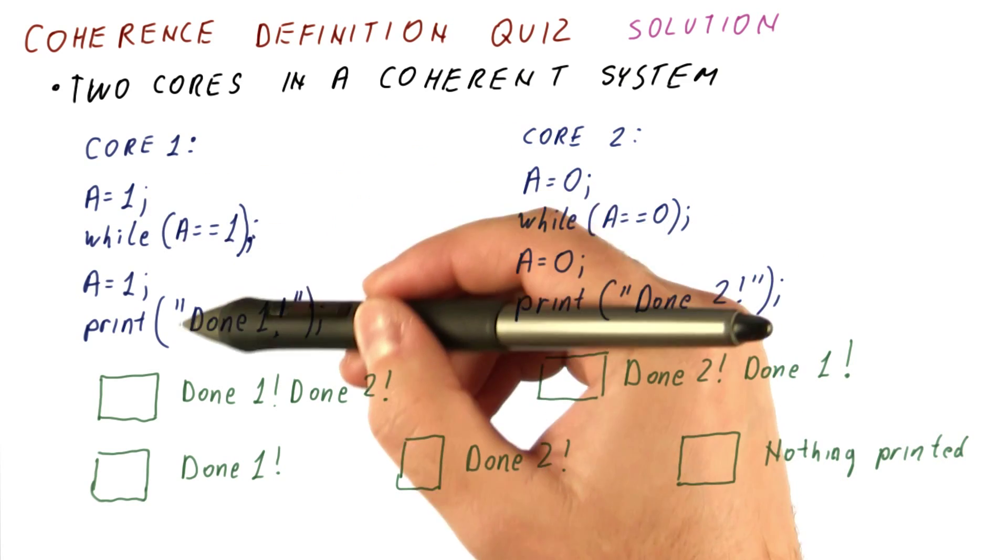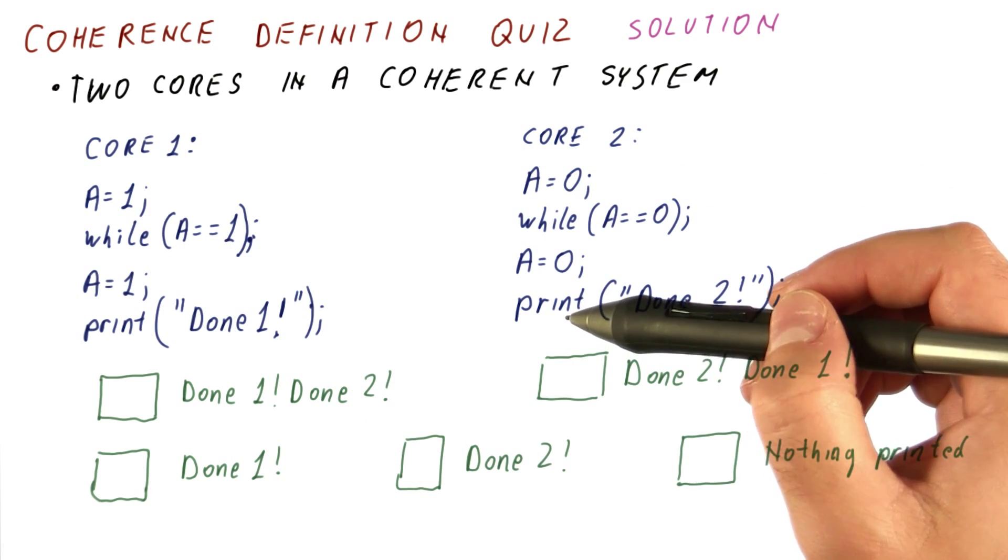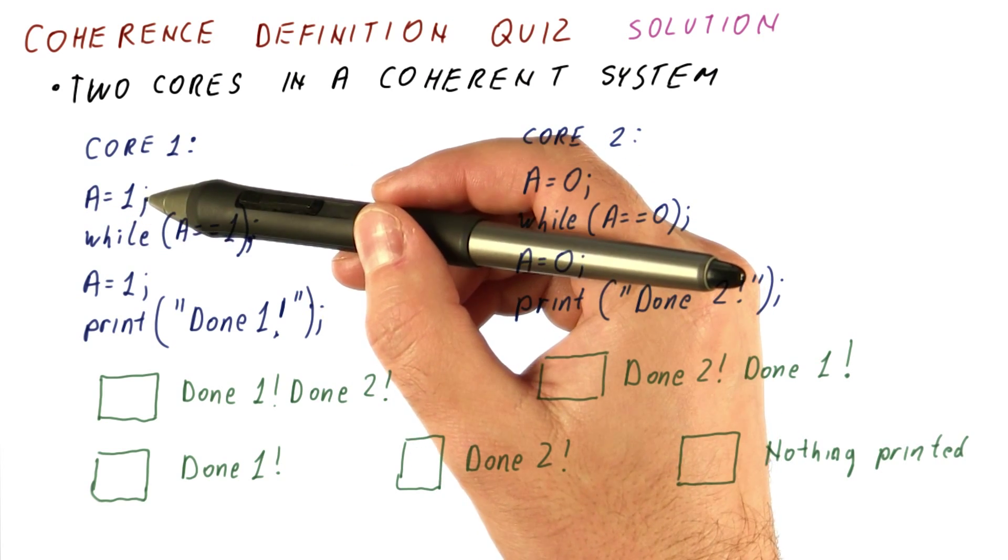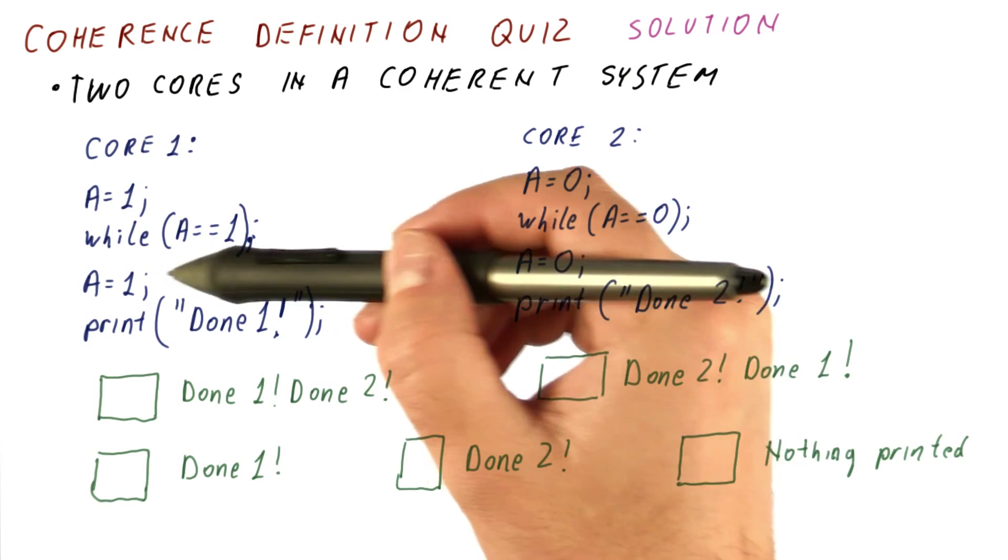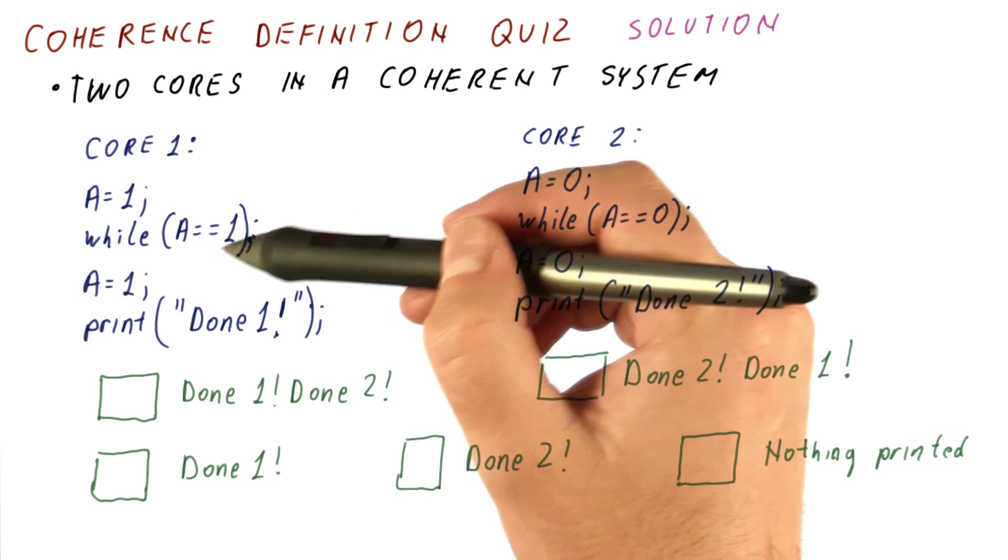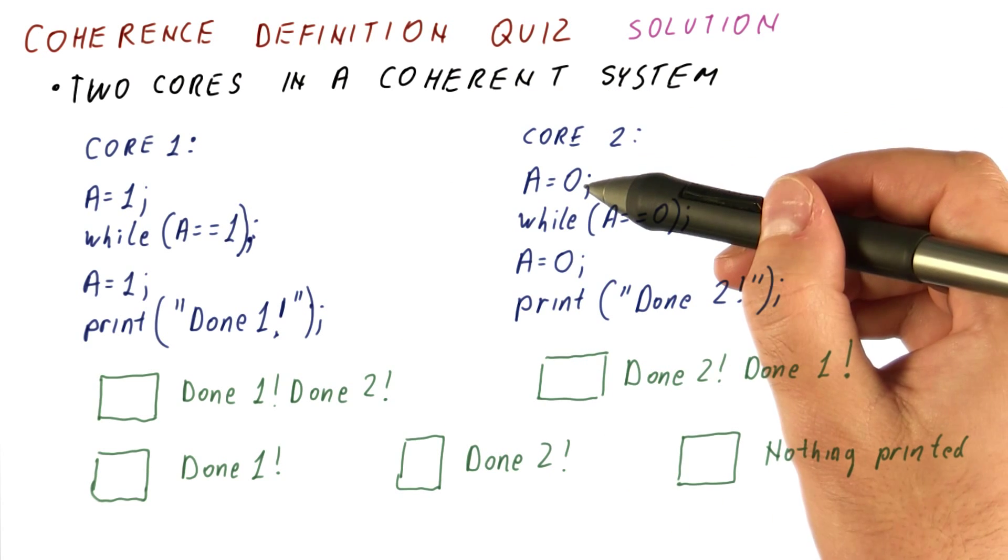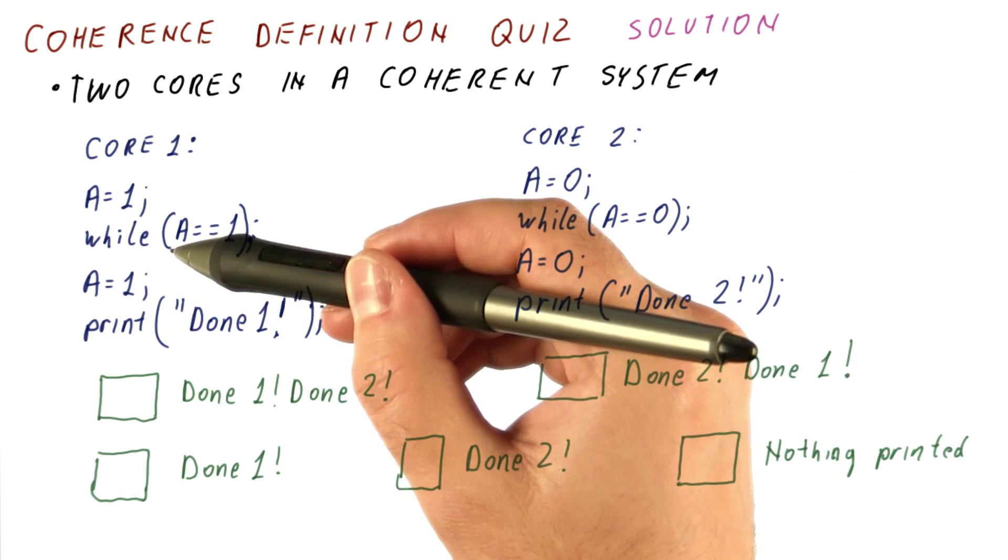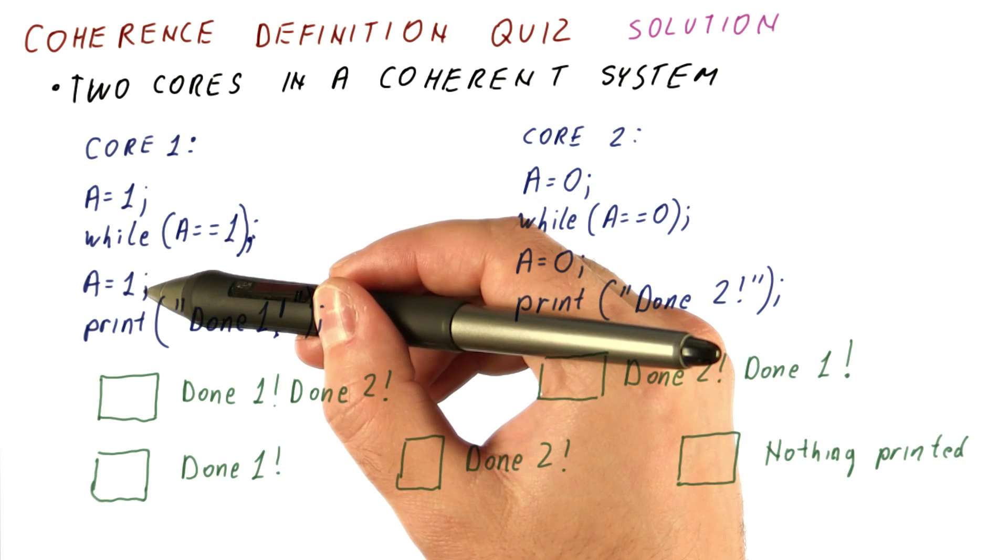Let's see what can happen in these two programs. If core one gets to go first with A equals one, it's then going to spin here for as long as A equals one. So it gets stuck until core two does something. Eventually, however, core two will do A equals zero, in which case core one gets to continue.